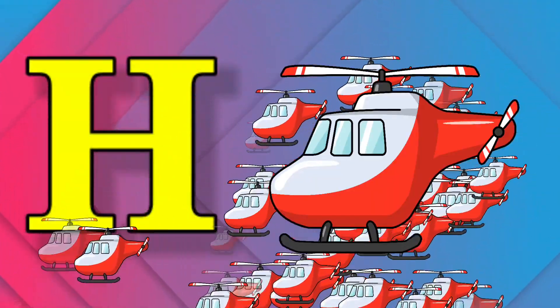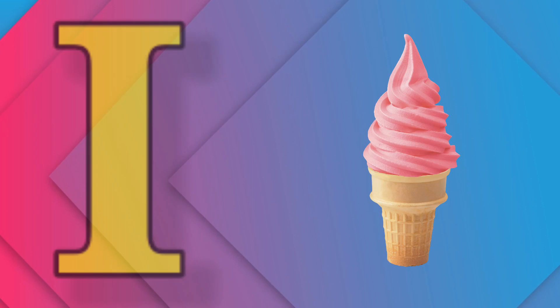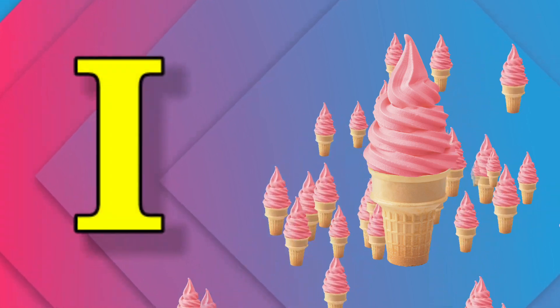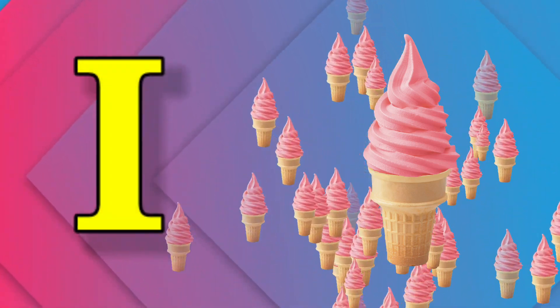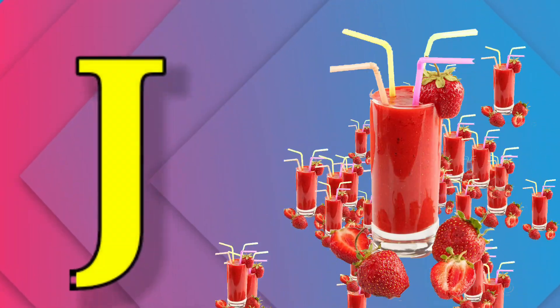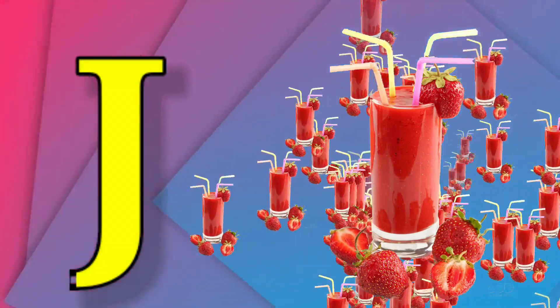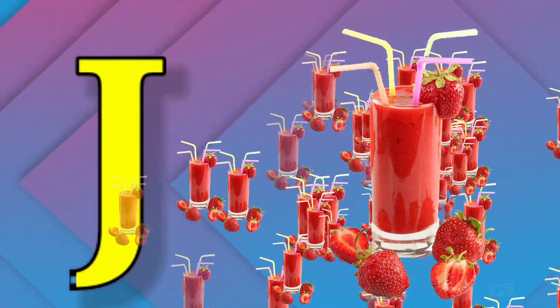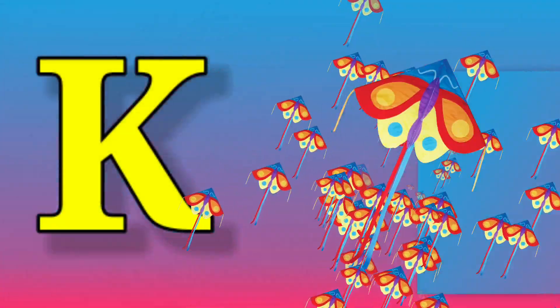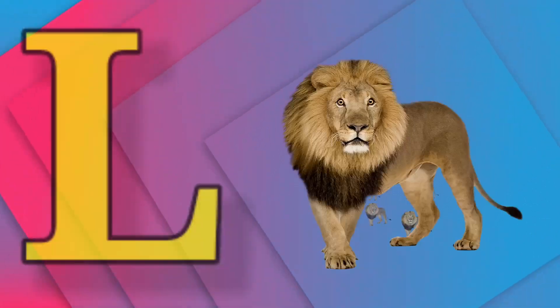I for ice cream, J for juice, K for kangaroo, L for lion.